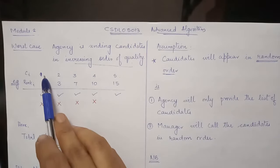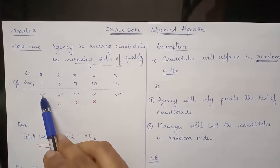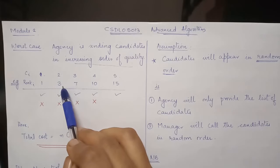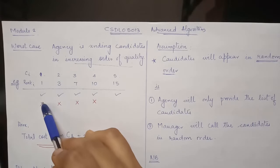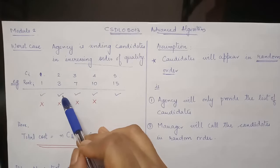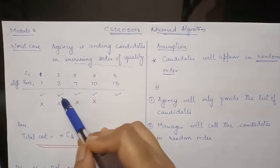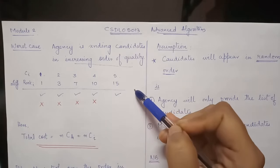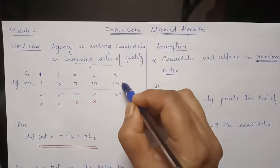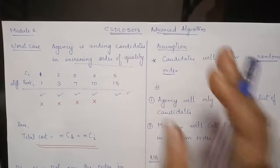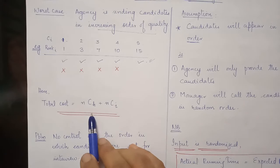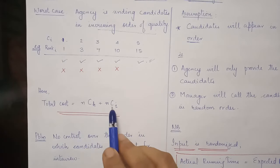So when candidate one is interviewed, the manager will hire him. When he meets the second candidate with a better rank, he needs to fire the first and hire the second. Likewise, the process of hiring and firing takes place for each and every candidate in sequence, and towards the end he needs to hire the fifth candidate. So the total cost turns out to be n·ch + n·ci.